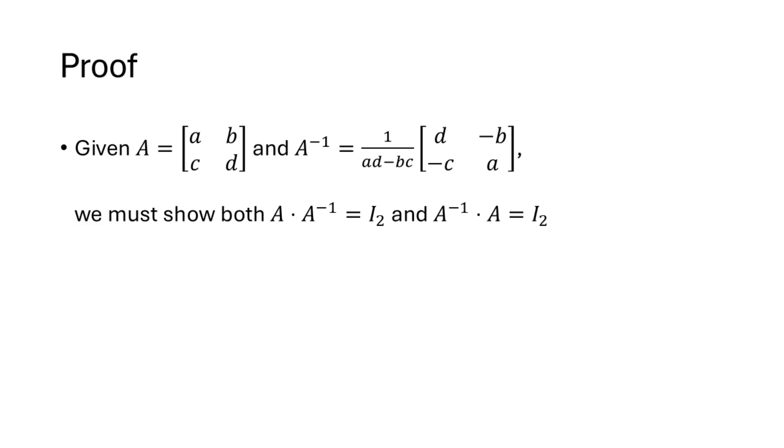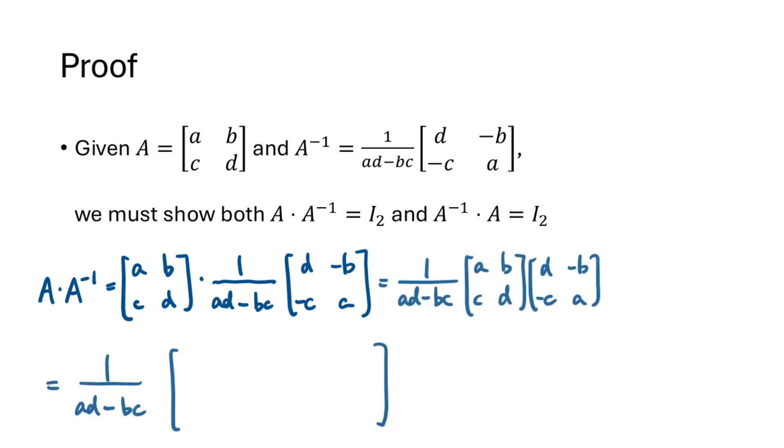So why does this formula work? If we're given a matrix A, B, C, D here, we have our formula for A inverse. Why does it work? Why is A times A inverse equal to I2 and A inverse times A equal to I2? Well if we multiply A times A inverse, we can pull the 1 over AD minus BC scalar out front.